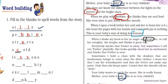Next is 'n', blank, 'u', blank, 'h', 't', 'y' — this is very easy. The word these letters make is 'naughty'. Let's complete it: N, A, U, G, H, T, Y — naughty.